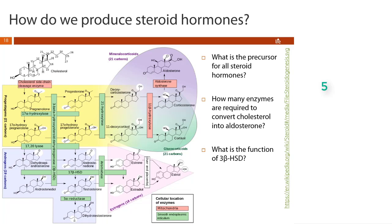Another type of question could be about enzyme function: what is the function of 3β-hydroxysteroid dehydrogenase? A lot of hints are in the name, and you can figure it out by looking at the reactant and product for all four reactions catalyzed by this enzyme. On all four of them, we have a hydroxy group at position three being oxidized into a ketone. So the function of 3β-HSD is to oxidize the hydroxy group at position three to a ketone.